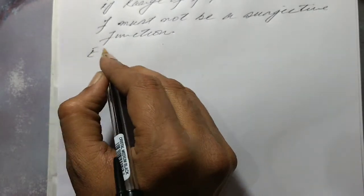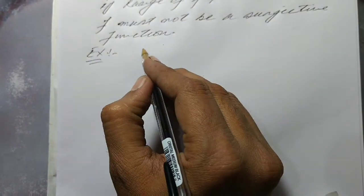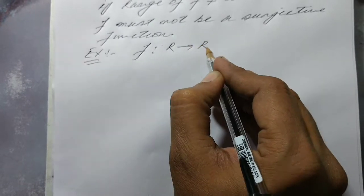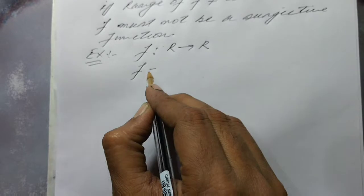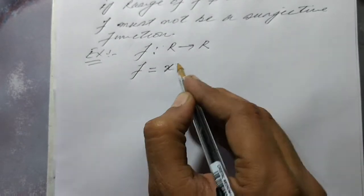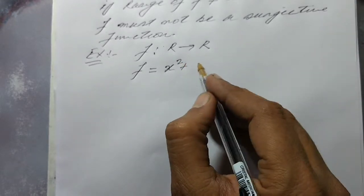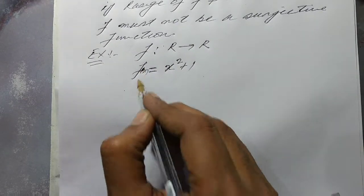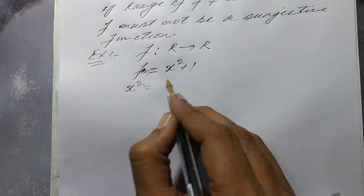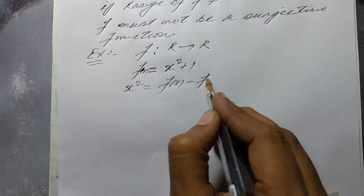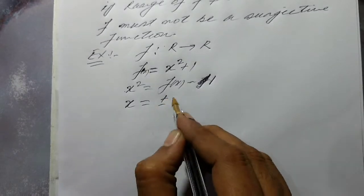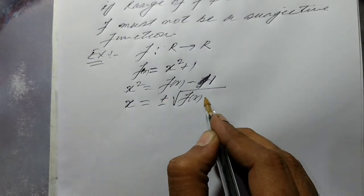Let us take an example. Let f is a function from R to R and f is equal to x square plus 1. So x square is equal to f(x) minus 1, or x is equal to plus minus square root of f(x) minus 1.